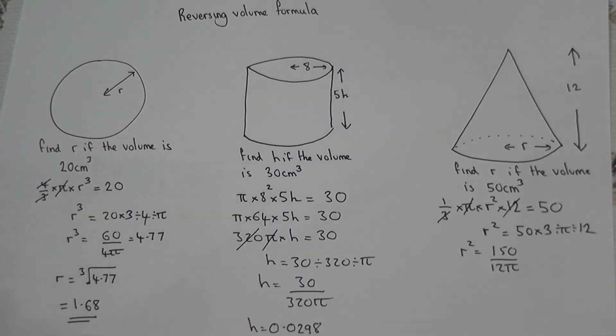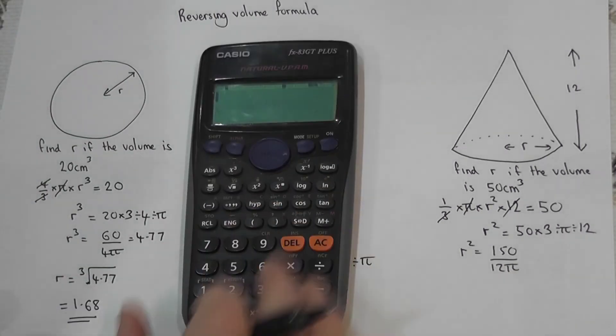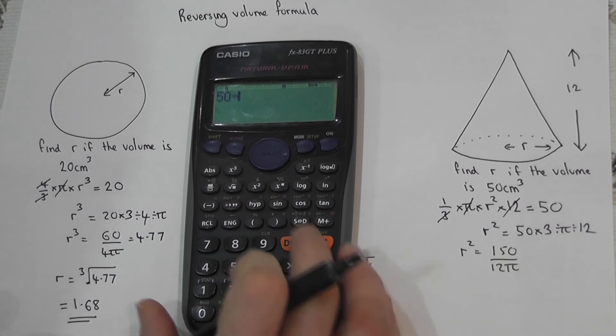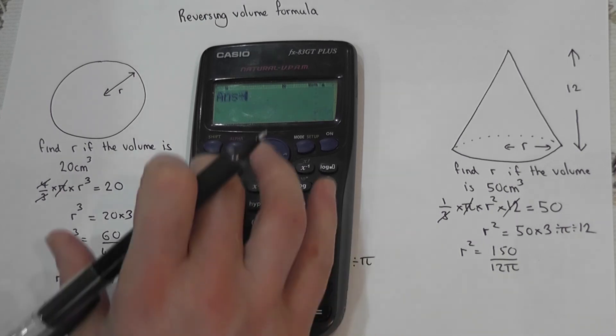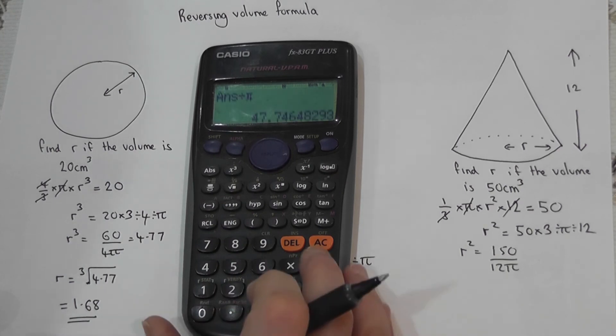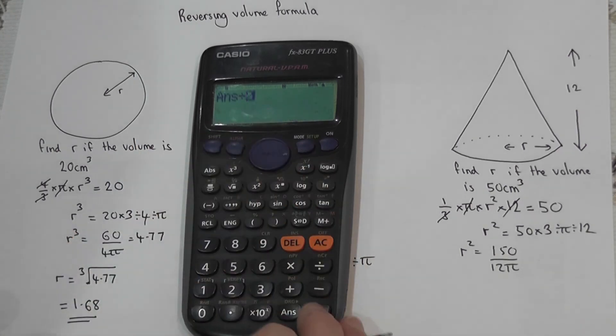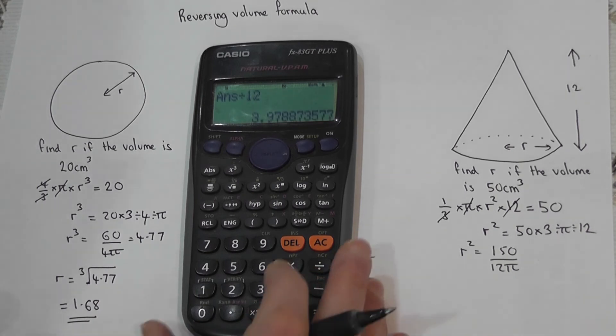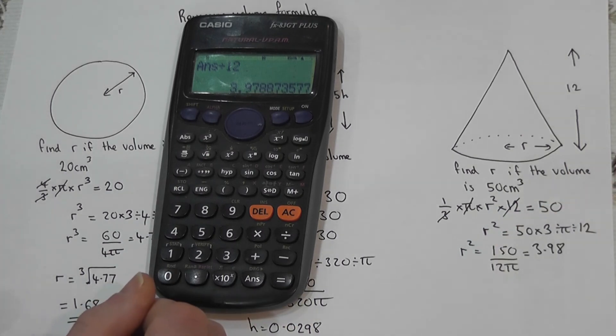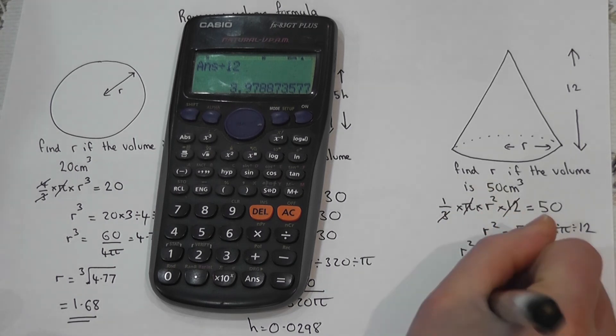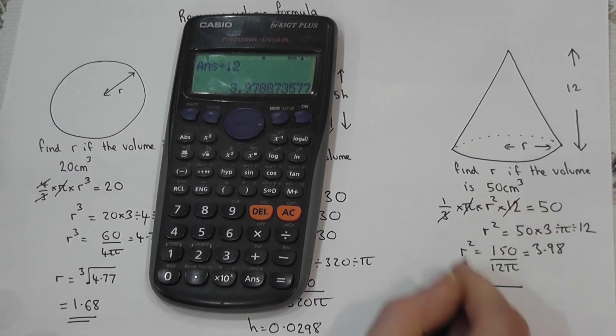Which, if you want to, you can write as 50 times 3, 50 over 12 pi, but I can work this out. So I've basically done 50 times by 3 divided by pi divided by 12, and this gives the answer 3.98 to 3 significant figures.